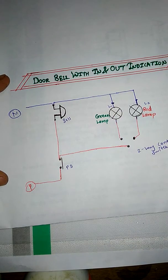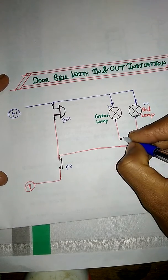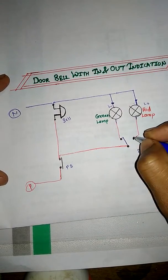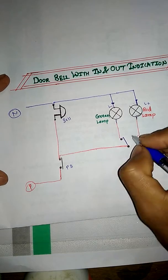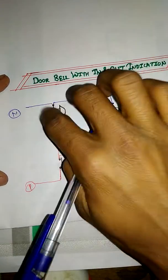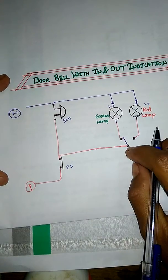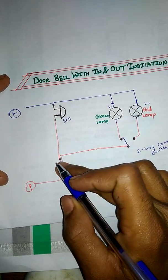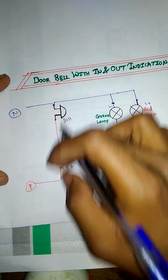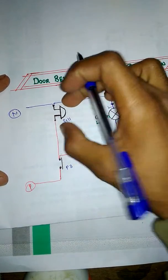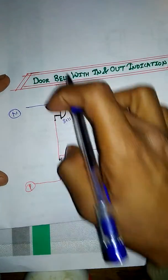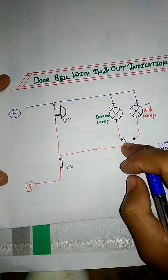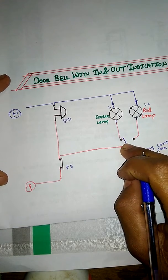Now what will happen if you place the switch in this position, that is you are inside the house. This will be inside the house and these two lamps are outside the house. If someone pushes this bell, the circuit is completed directly. The red or green lamp will indicate according to the position of the switch.